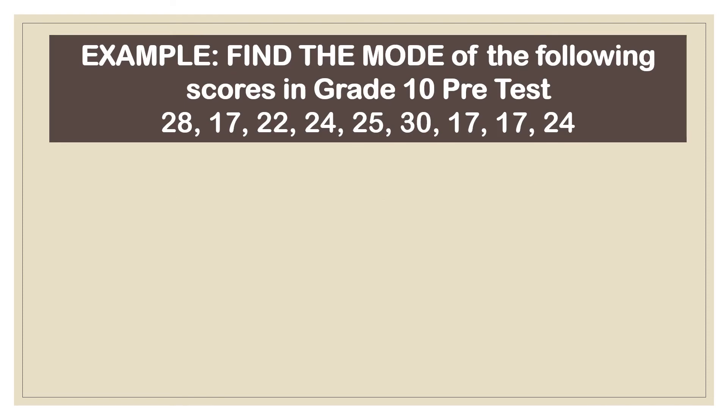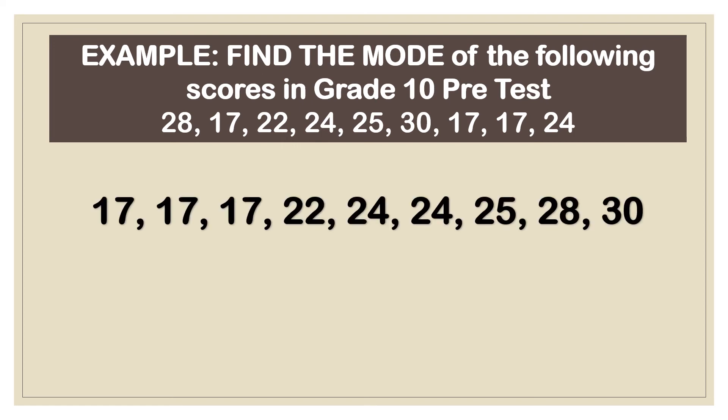Example, find the mode of the following scores in the grade 10 pre-test. Just look at the number that appears the most times. Mode is 17. This is a type of mode called unimodal because there's only one mode. Only 17 appears the most times. So the mode here is 17.